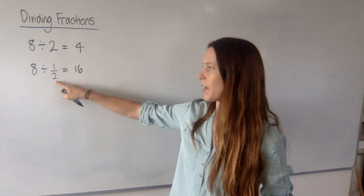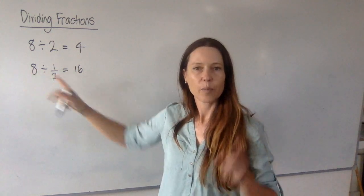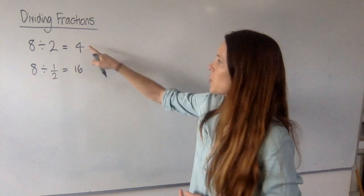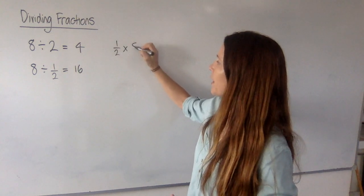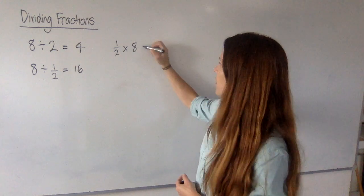Now, we worked that out by just thinking about how many halves there were in 8, but there's an easier way. Just as with this question, there's another way of doing it. We could say, what is half of 8? Okay, now half of 8 is 4, isn't it?